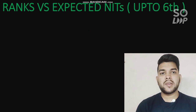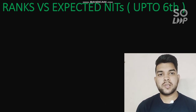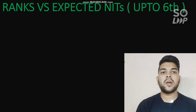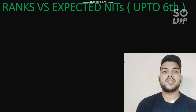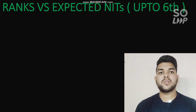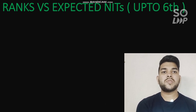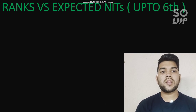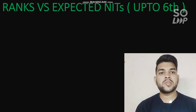Here is the rank versus expected NIT up to the sixth round. One important point before starting: this year the cutoff for CS-related branches has gone down because demand is high, meaning the cutoff is lower compared to previous years. The cutoff for other branches has gone up. I will consider this in the video. Also note: whatever cutoff I provide is applicable only if you have filled choices carefully — many students make mistakes in choice filling and arrangement, so please watch till the end.